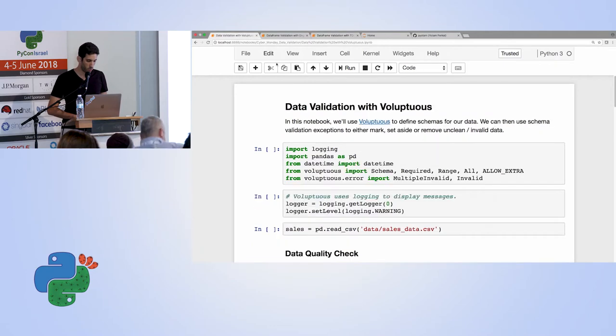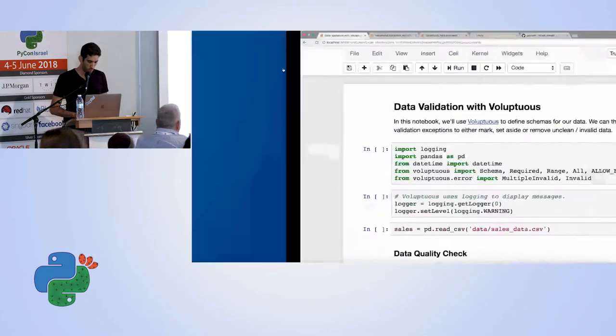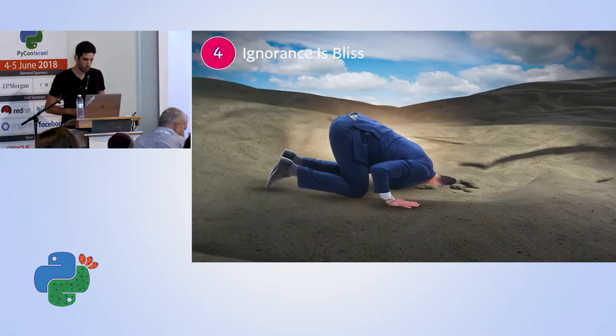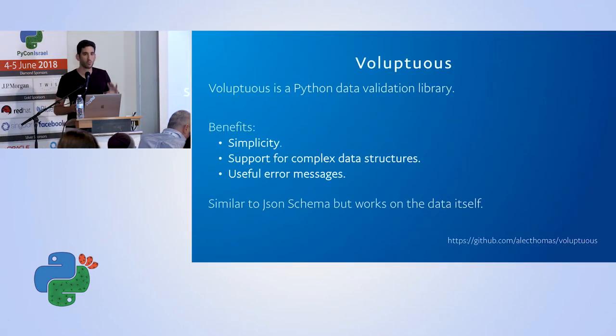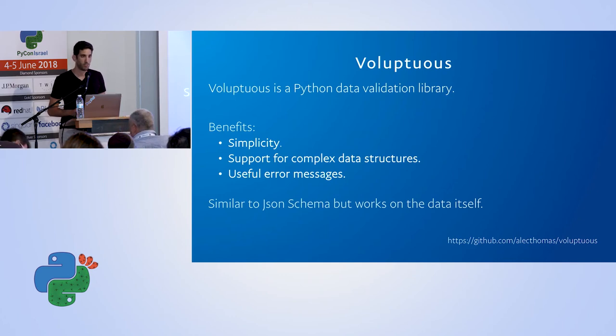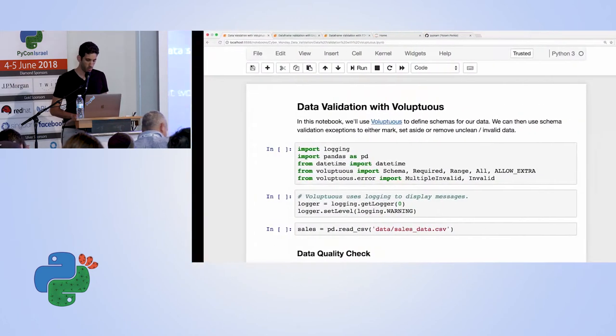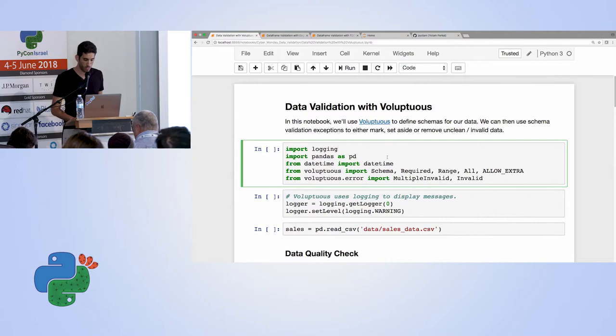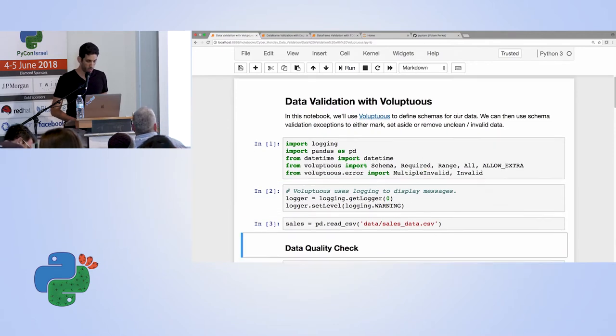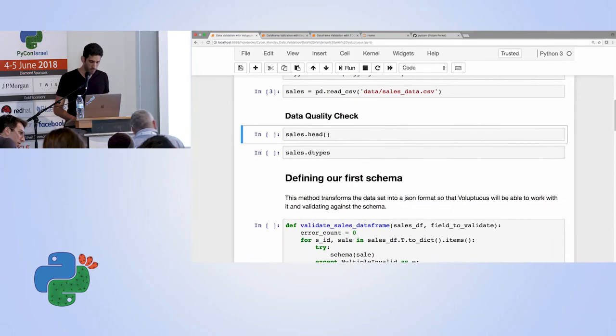The first tool I want to talk to you about today is called Voluptuous. Voluptuous is by far the most popular tool out of the three that we'll see today. It's not meant specifically for data frame validation, but it can be used to do that and I'll show you how.